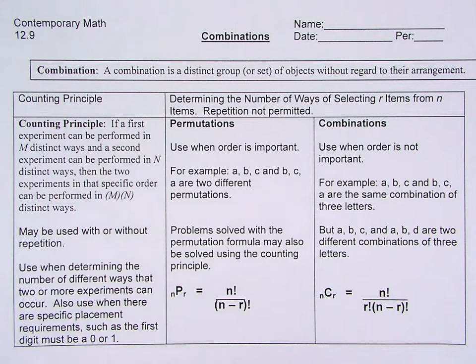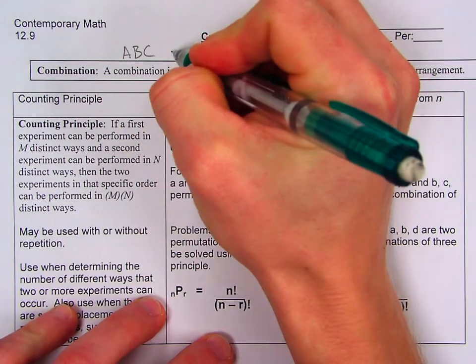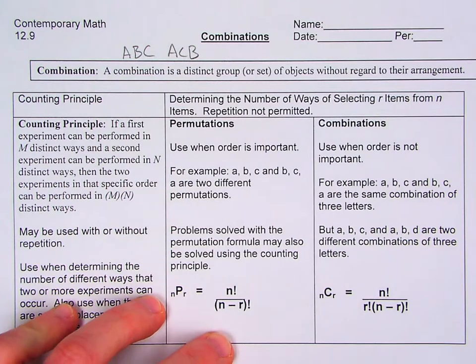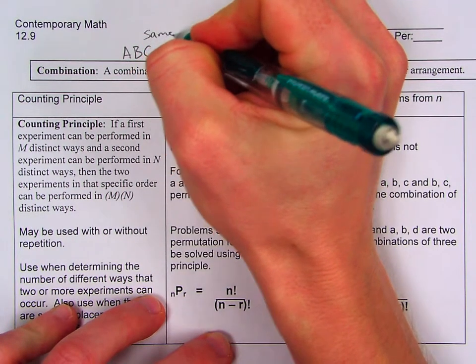So first off, the definition of a combination is a distinct group or set of objects without regard to their arrangement. When we were talking permutations last time, a permutation is a distinct ordered set of objects. So when we're talking permutations, if we had something like ABC and ACB, those would be different permutations, but this is actually the same combination.